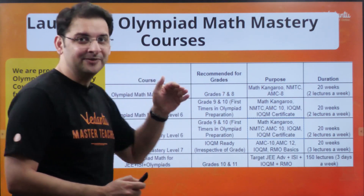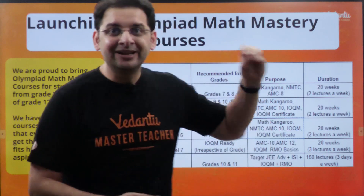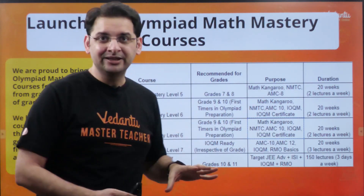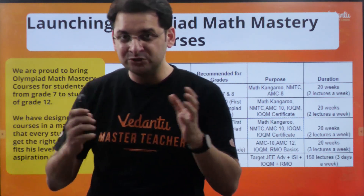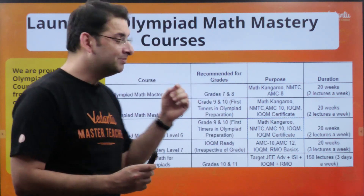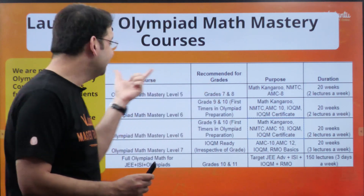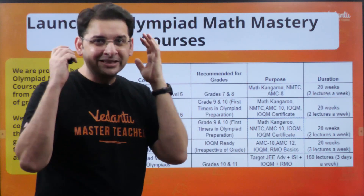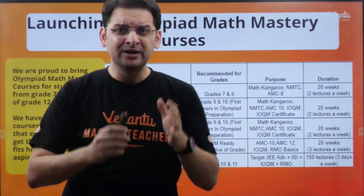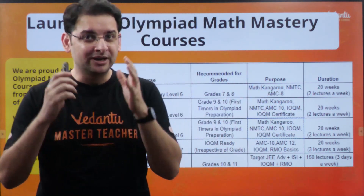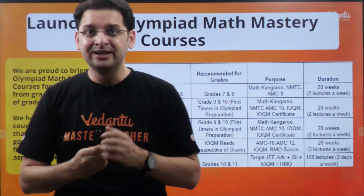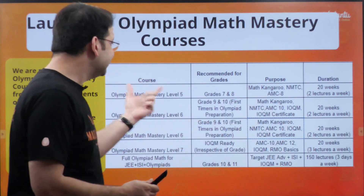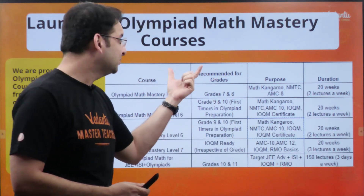We have started the Olympiad journey right from Level 1 till Level 9. Levels 1 through 4 are still in the making and will be introduced very soon for junior students. For grades 7 and 8, we are introducing Olympiad Math Mastery Level 5. The idea is to make them prepare for these amazing olympiads and also for exams like JEE and NSCS which come in their life later on.